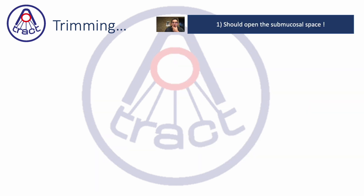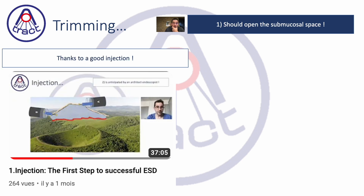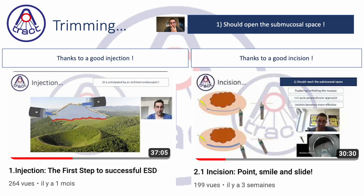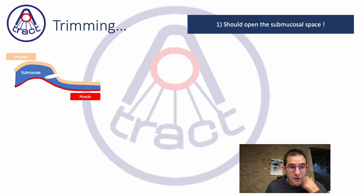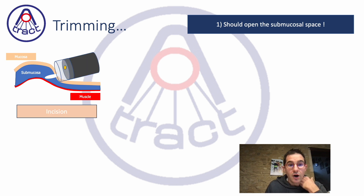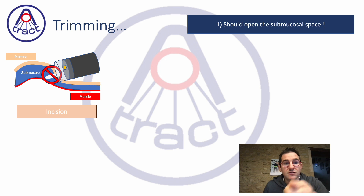First, what is theoretically the benefit of trimming? For doing a good trimming you need a good injection and a good incision, so spend time reviewing those two episodes previously shown on ESD School. Trimming is something that, after the incision, will open the space — because when you do your incision it is impossible to insert the scope into the submucosal space.